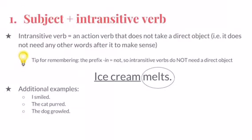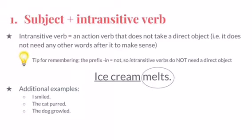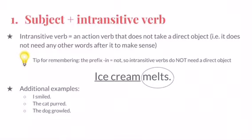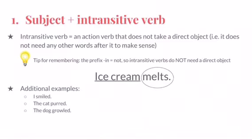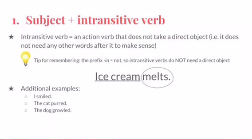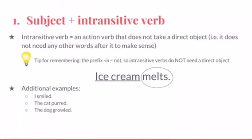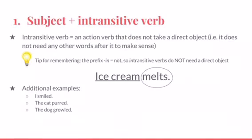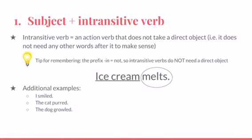Take a look at the example: 'Ice cream melts.' The subject is underlined and the intransitive verb is circled. Notice that even though the sentence is very short, it still meets all three requirements for being a complete sentence. It has a subject and a verb, and it expresses a complete thought, meaning it can stand by itself. The verb is intransitive because it doesn't need anything after it in order for the sentence to make sense. Practice identifying the complete subject and intransitive verb in the additional examples at the bottom of the slide.